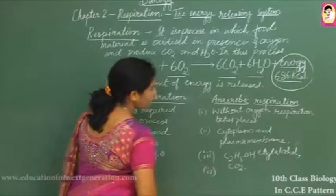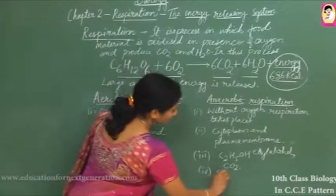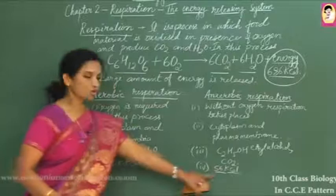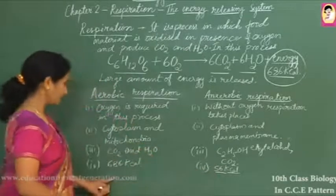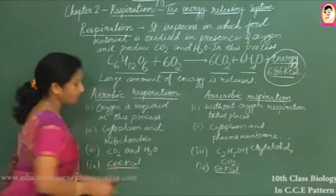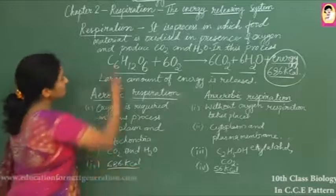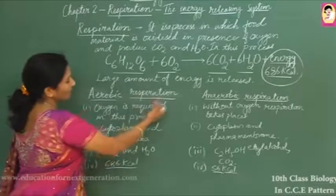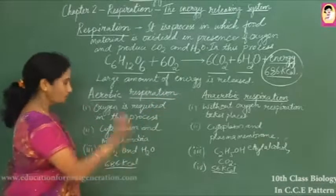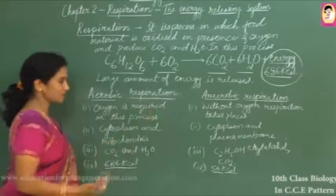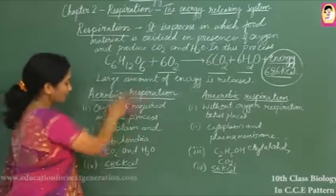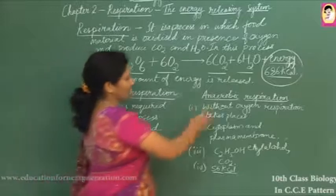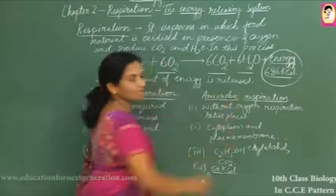Anaerobic respiration produces 2 ATP molecules, compared to aerobic respiration which produces 38 ATP molecules. Respiration can be classified into two types: aerobic and anaerobic. Aerobic respiration is seen in higher animals and plants, while anaerobic respiration is seen in bacteria.